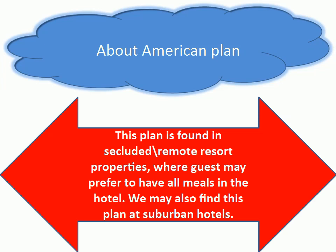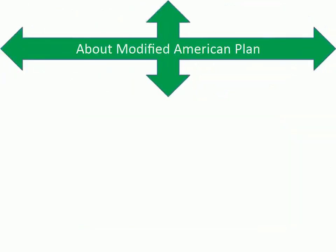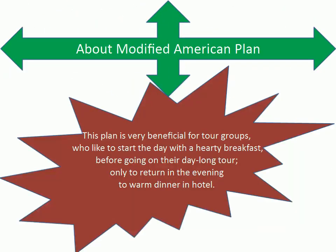About American Plan: This plan is found in secluded or remote resort properties where guests may prefer to have all meals in the hotel. It may also be found at suburban hotels. About Modified American Plan: This plan is very beneficial for tour groups who like to start the day with a hearty breakfast before going on their day-long tour, only to return in the evening to a warm dinner in the hotel.